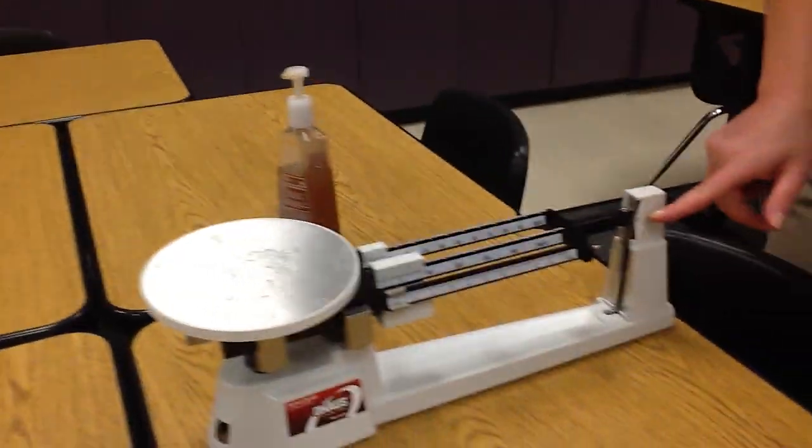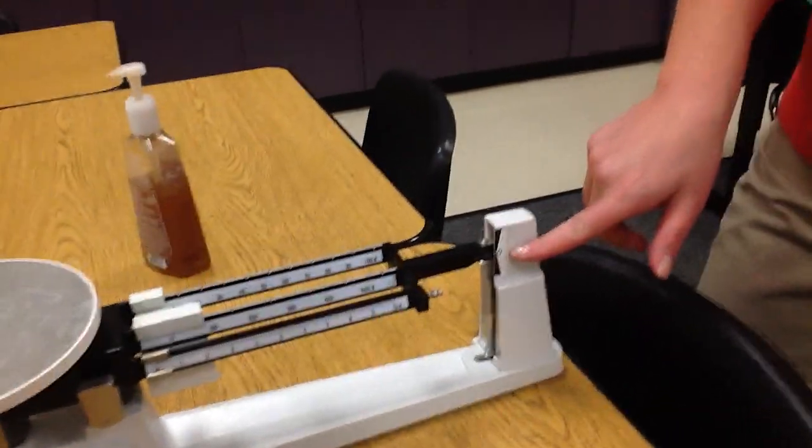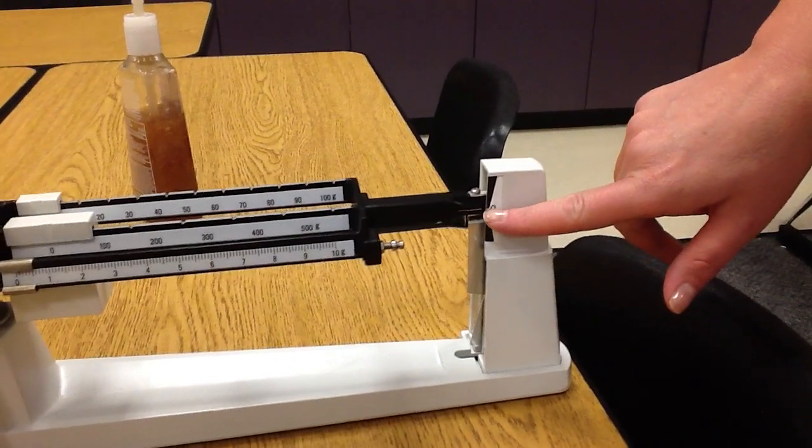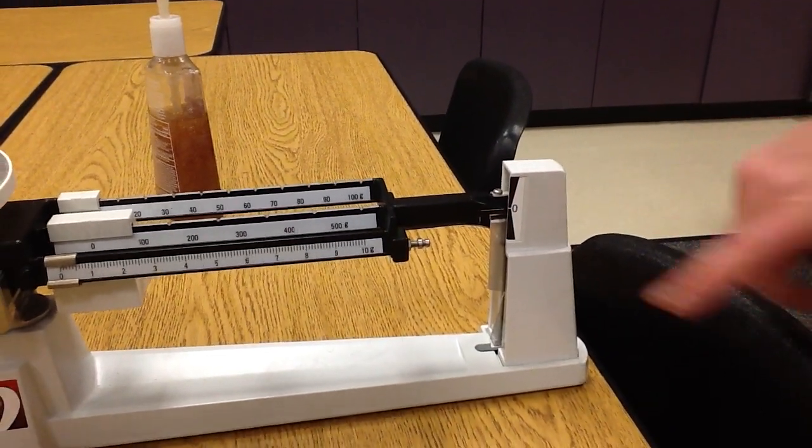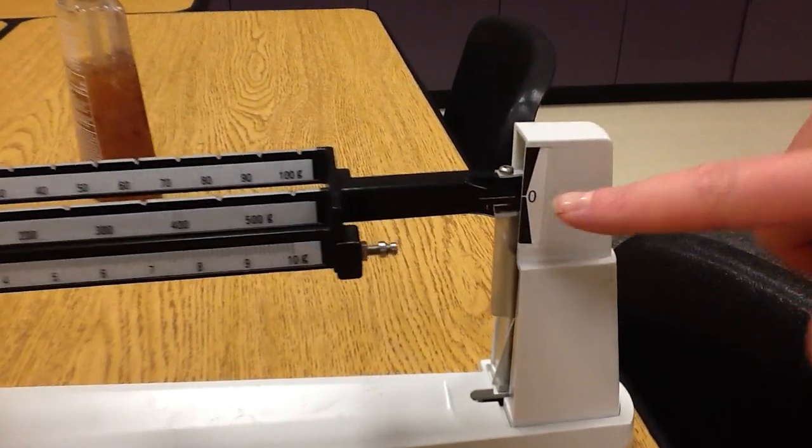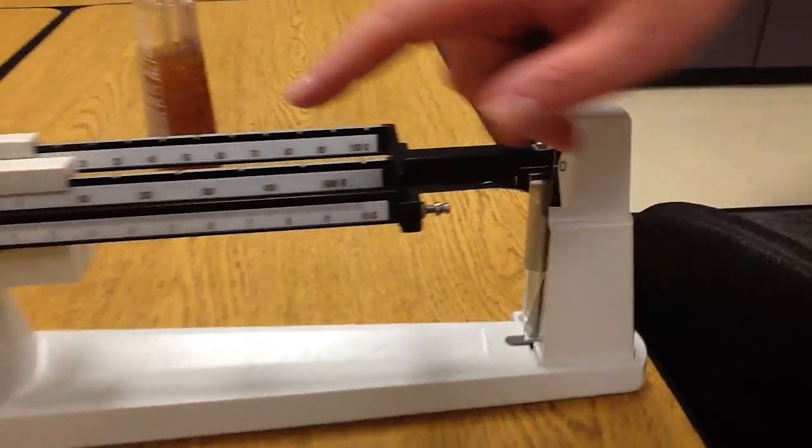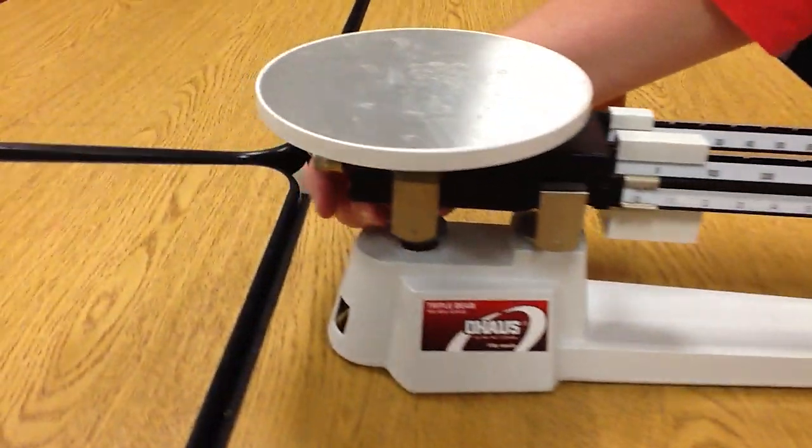And if you look over here, we need to make sure when I'm talking about the balance, we need to make sure that line is on that zero mark, and as you can see it is. But if it wasn't, we would adjust that thumb screw back over on this side.